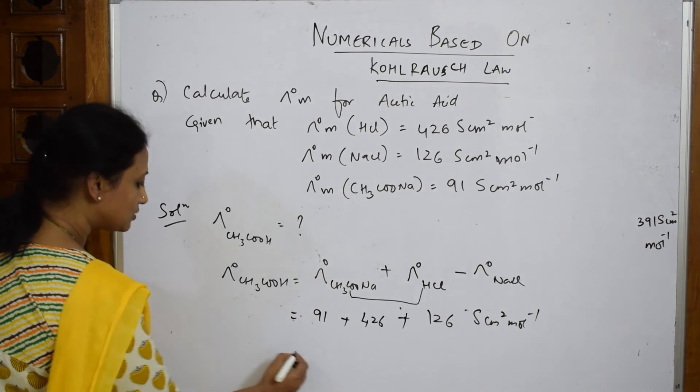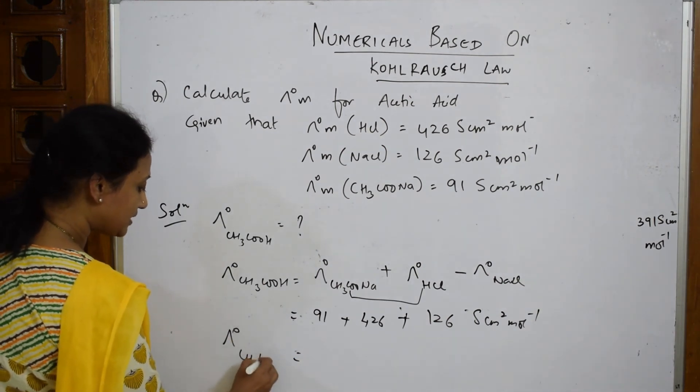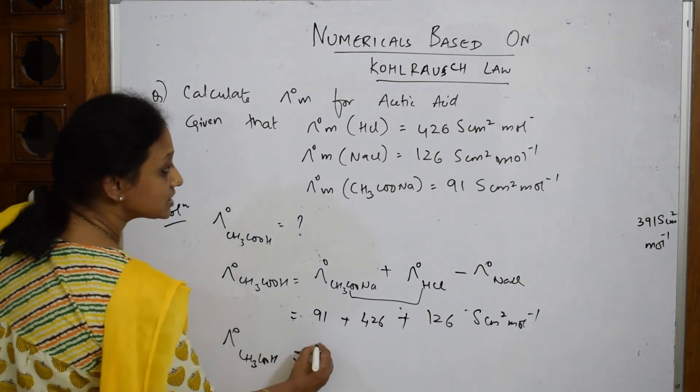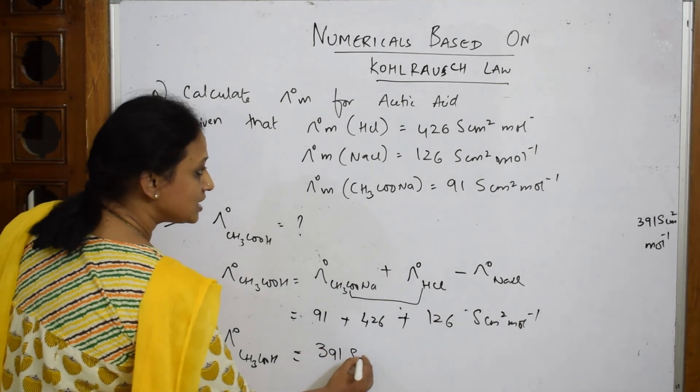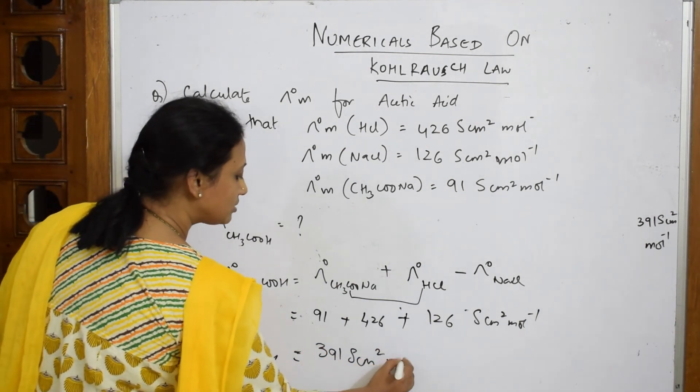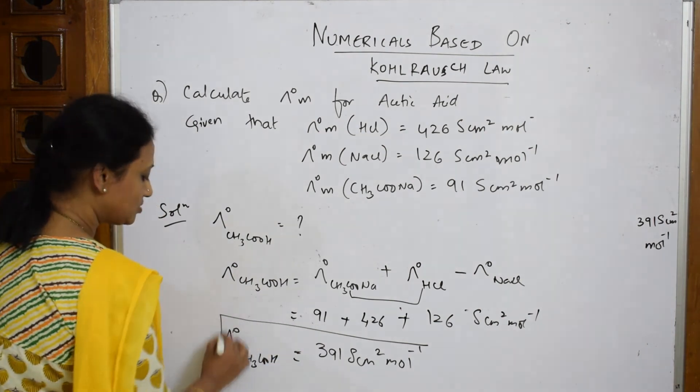Now when I add this, what do I get? Molar conductivity at infinite dilution for acetic acid, which is equal to 391 Siemens cm² mole inverse. This is your answer.